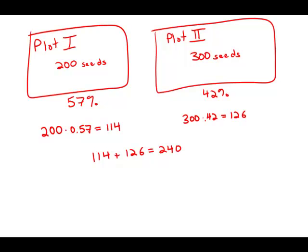We would like to know 240 is what percent of the total number. Well, the total number, 200 plus 300, is 500 seeds. There were 500 seeds total, and of those 500, 240 of them germinated. So the fraction times 100 is the percent, and this simplifies to 48%, answer choice C.